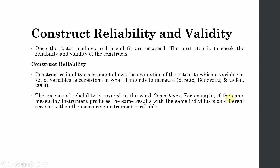For example, if the same measuring instrument produces the same results with the same individuals on different occasions, then we can say that the measuring instrument is reliable. Or, if the same measuring instrument is used with the same individuals under the same conditions on different occasions and it produces the same results, then we can say it is consistent.